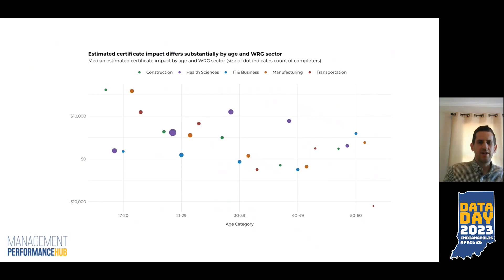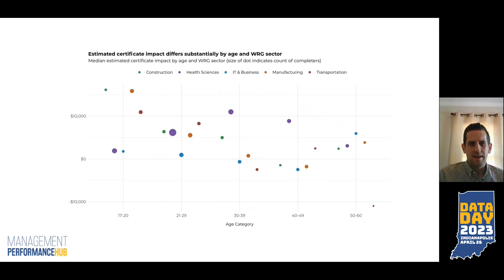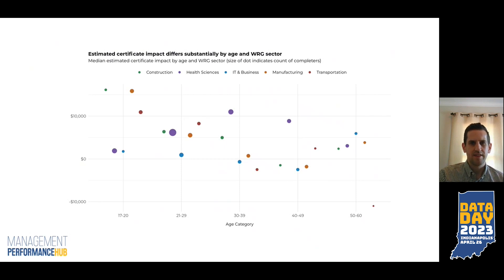It's also interesting to note that health sciences is the one industry that follows a different pattern — the highest certificate impact was actually for individuals in the 30-to-39 age category. This suggests that health sciences certificates may be functioning a bit differently than some of the other categories.